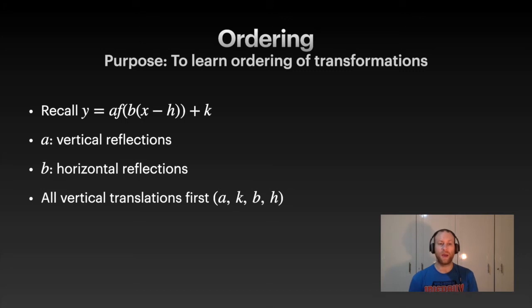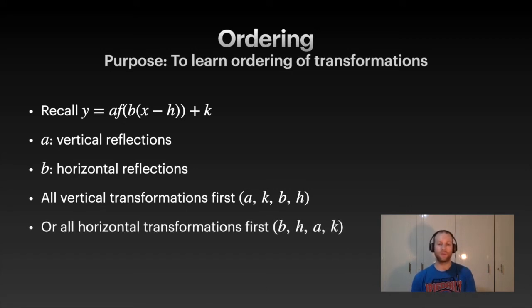You've got two options for the ordering. Either you do all the vertical transformations first—that should be transformations, not translations. All vertical transformations first, this would be your ordering: you do a the reflection, k the vertical shift, b your horizontal reflection, and h your horizontal shift. Or you can do the horizontal transformations first, so do the b then the h and then a k. Either way is totally fine. I tend to do verticals more often than horizontals first. That's just me, it doesn't matter. They're both going to get you the same thing. Deal with either the x's first or deal with the y's first.